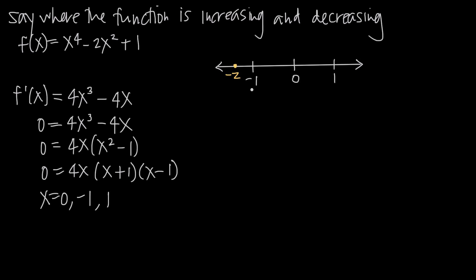We'll test x = -2 in the interval (-∞, -1); x = -½ in the next interval; x = ½ in the next; and x = 2 in the last interval. It doesn't matter which point you pick as long as it's in the interval. We plug these test points into f prime — that's why it's called the first derivative test. Label the number line f' to remind yourself you're plugging into f prime.